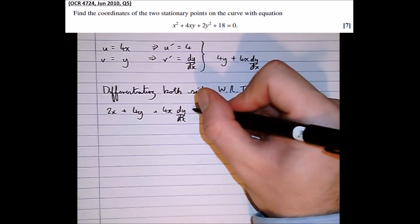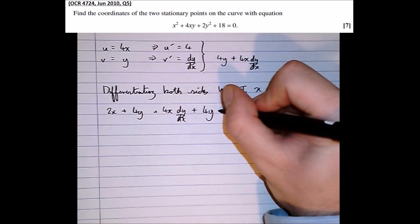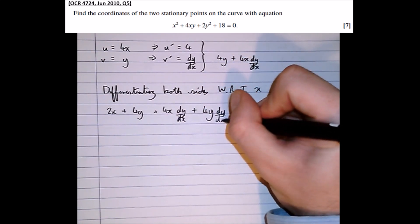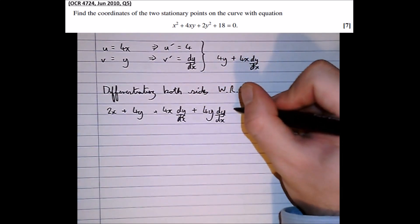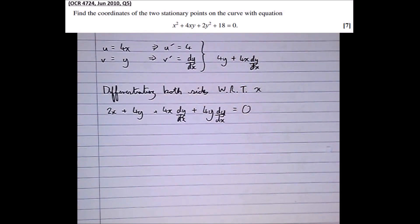So we know that the differential of 4xy is 4y plus 4x dy by dx. Next term 2y squared, well that becomes 4y when we differentiate it but because we've differentiated y we need to times by dy by dx plus 18, well 18 differentiates to 0, equals and the differential of 0 on the right hand side is also 0.